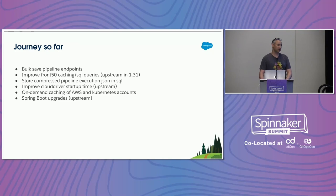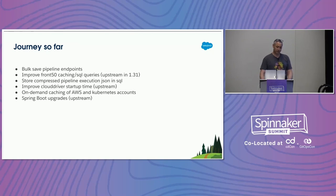We had a bunch of issues with Clouddriver startup time, especially with lots of accounts. Before the new account APIs showed up, the only way to do it was to have a big YAML file that took a long time to parse. We tried to make that faster. And on-demand caching is something I want to dive into a little more here.